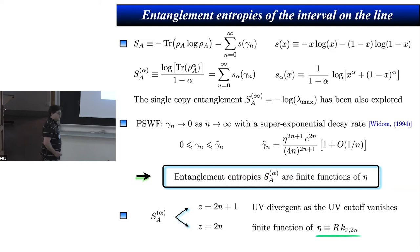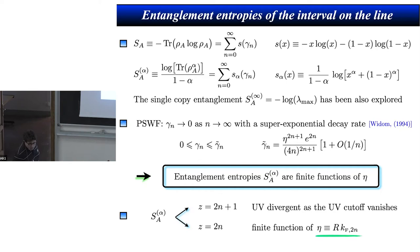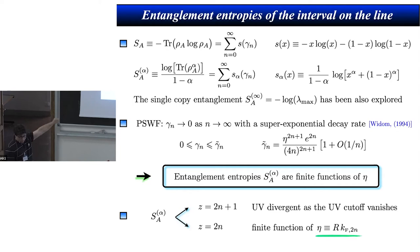For odd Z, the spectrum is not discrete but real, and when you integrate over a real spectrum it leads to UV divergence. The single copy entanglement is the limit as alpha goes to infinity of the Rényi entropies. You can write it as a sum of eigenvalues of the reduced density matrix to the power alpha; when alpha goes to infinity, you select the largest eigenvalue.